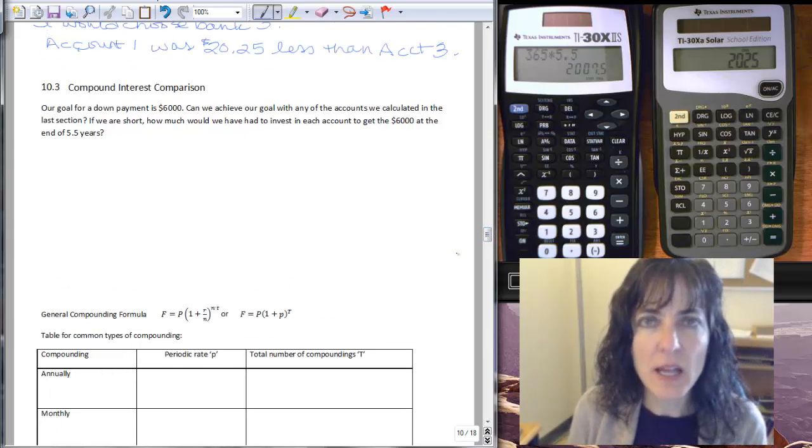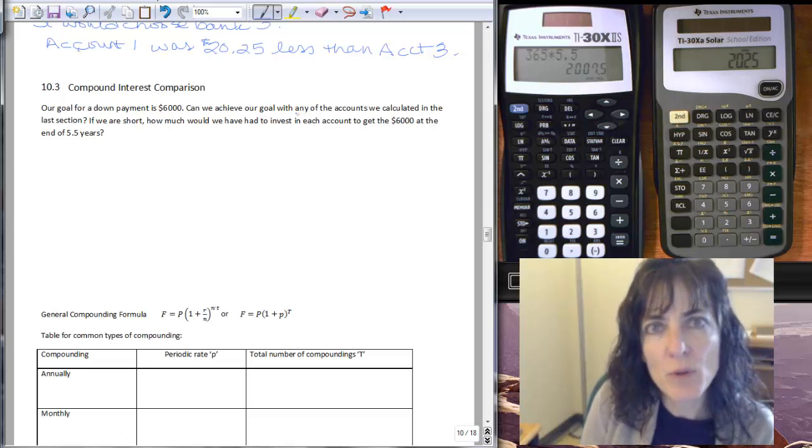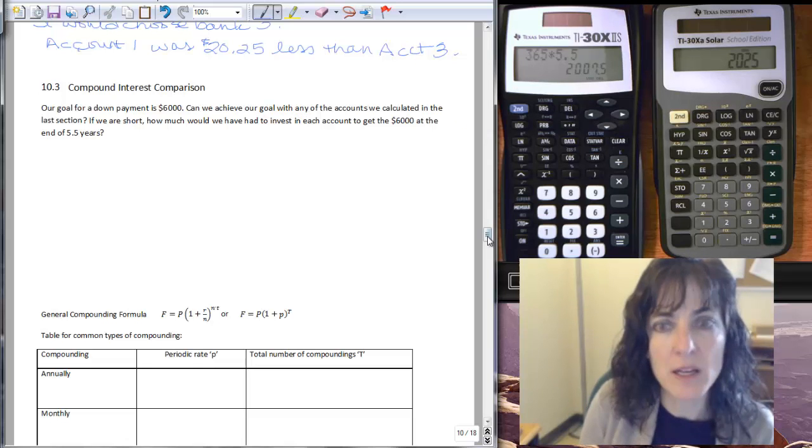So if we needed to have $6,000 for our down payment, can we reach our goal with any of those accounts as they were stated?